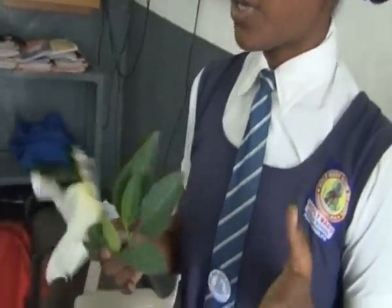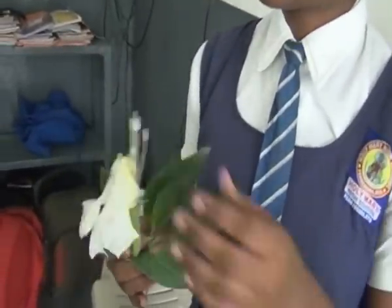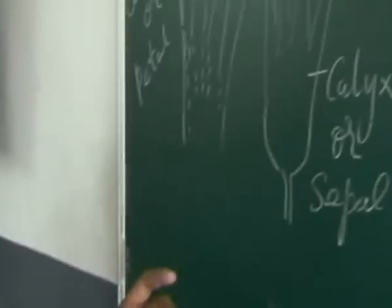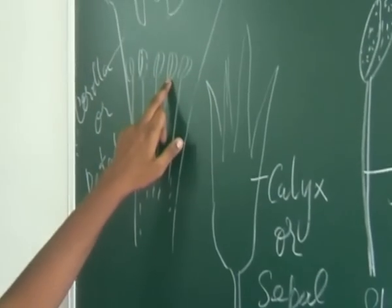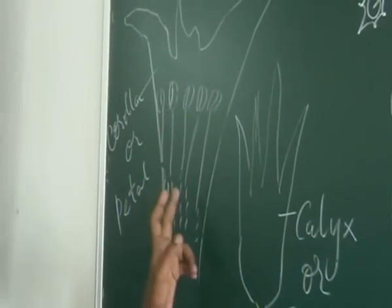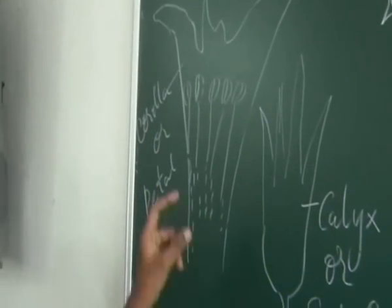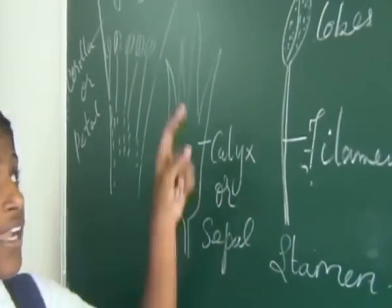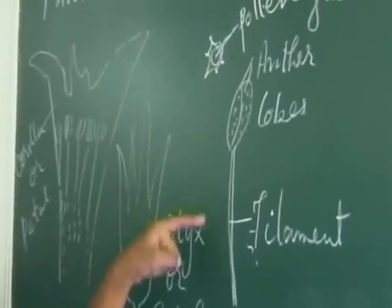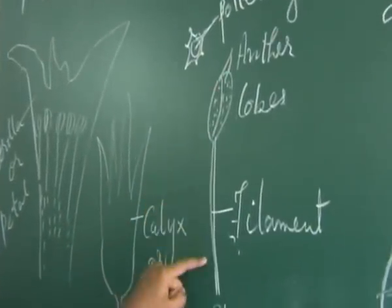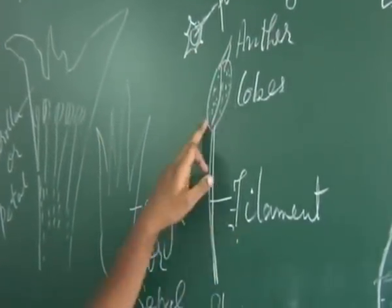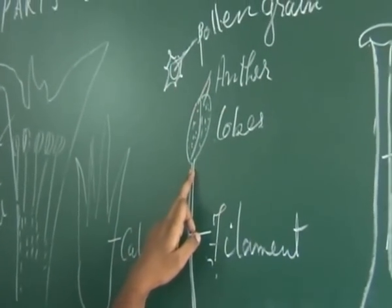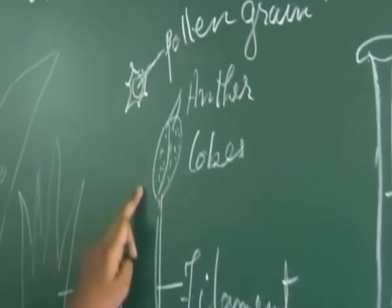I am going to show you the male reproductive organ of the flower. The flower has five stamens, which are also known as androecium. Androecium is divided into two parts: one is the anther, and the pipe-like extension is called the filament. The anther is divided into two lobes, each known as anther lobes, and pollen grains are present in the anther.